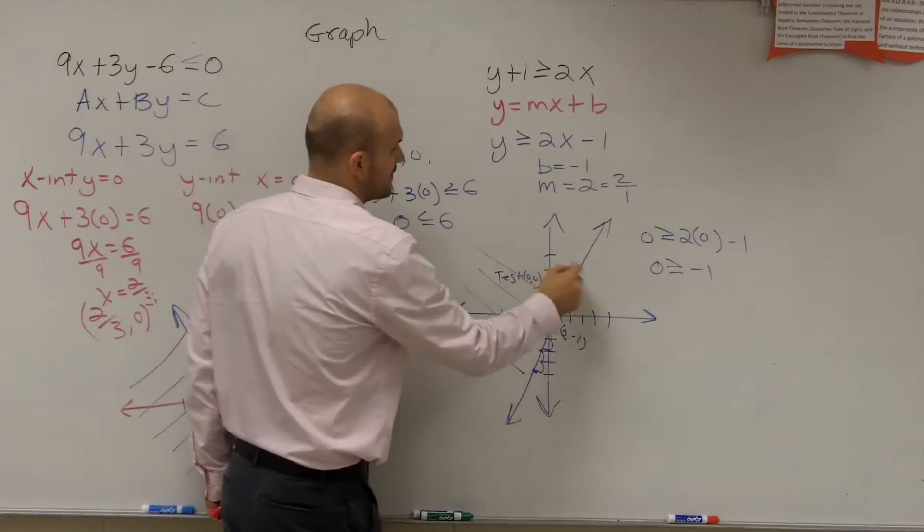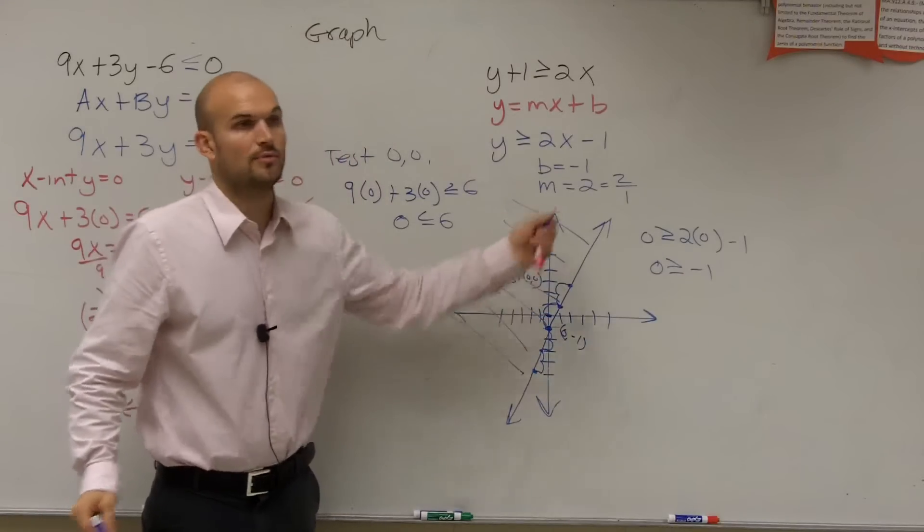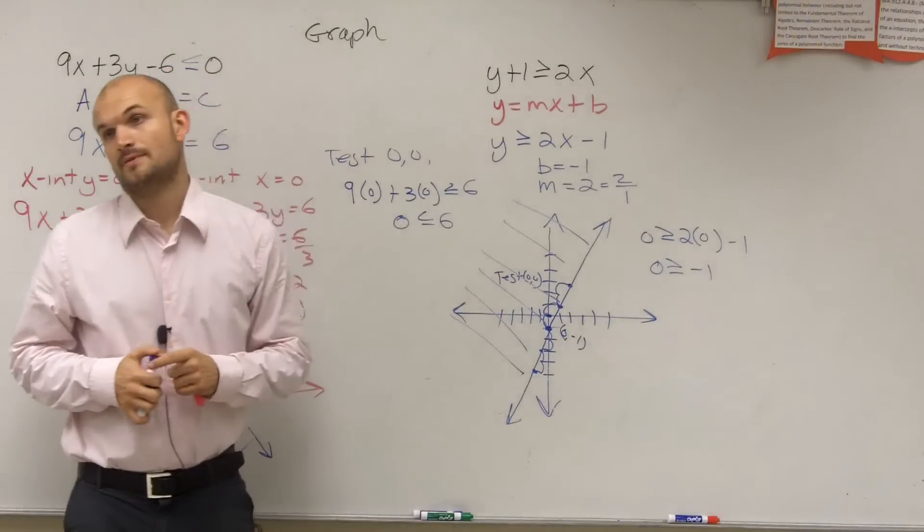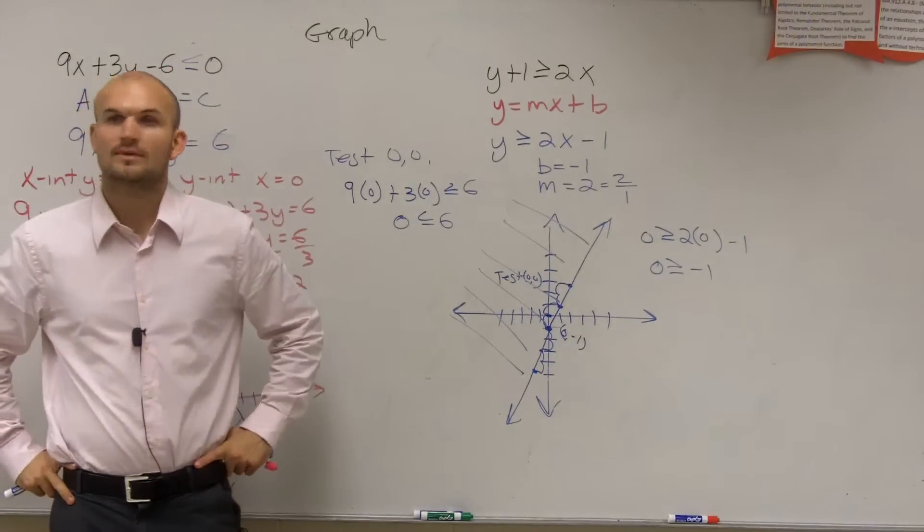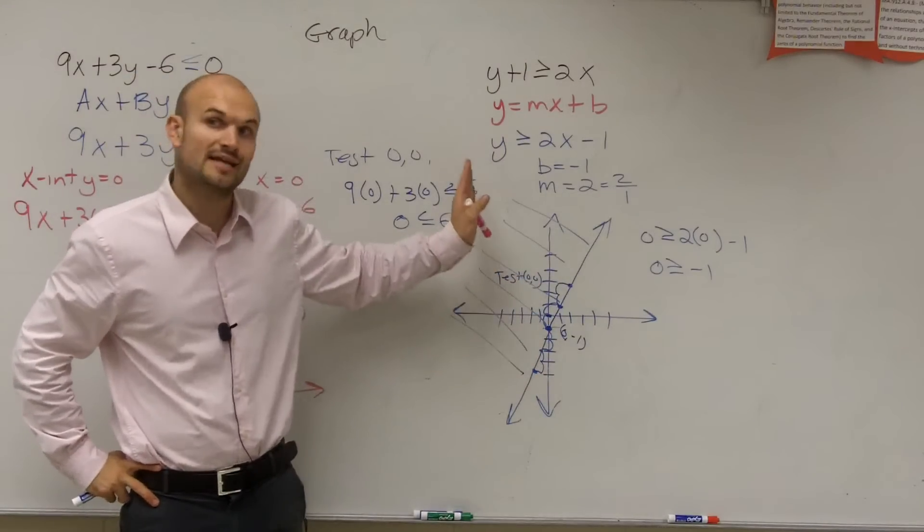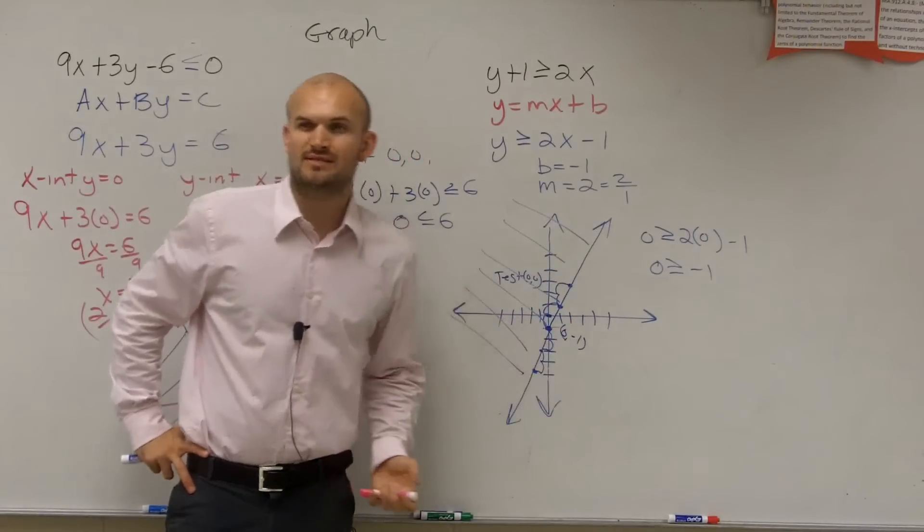That means all the points above it are true. So since my test point is true, that means all of the points are true. Where your test point is. If your test point's true, that's where you shade. If my test point was false, I would have shaded it on the other side of the line. Does that help?